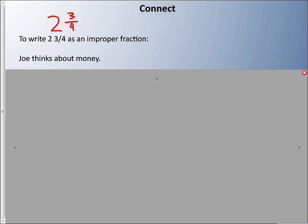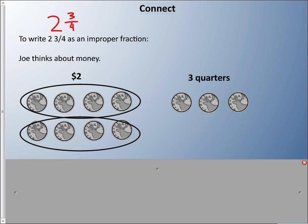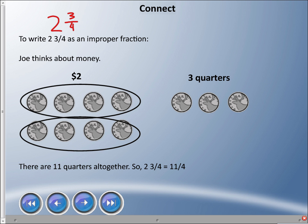One way is you can think about money. If we have two and three quarters, you could think of it this way: I have two dollars, and a quarter literally means a quarter because there's four of them in a dollar. Two and three quarters—how many do we have all together?